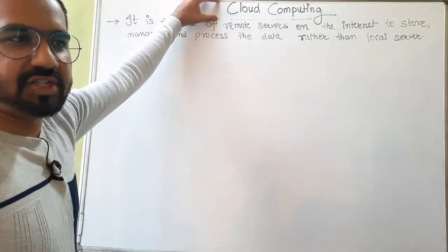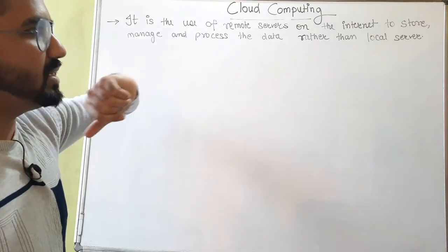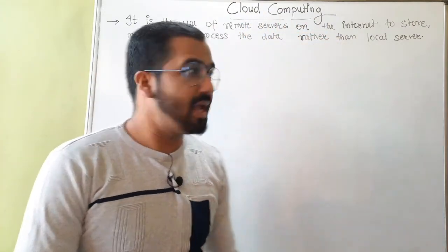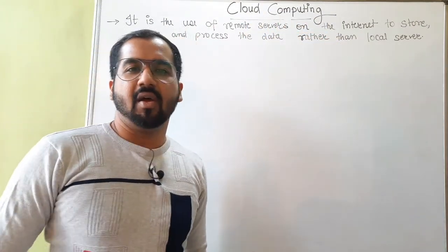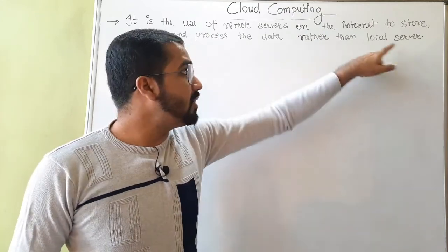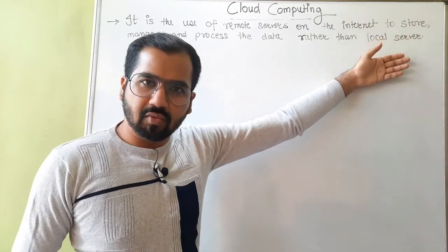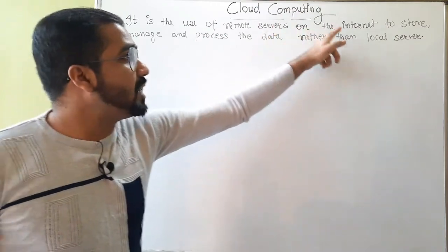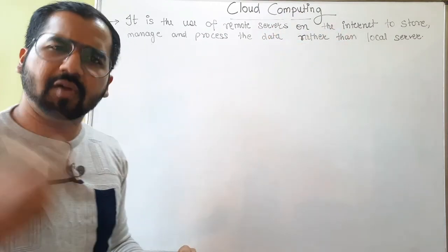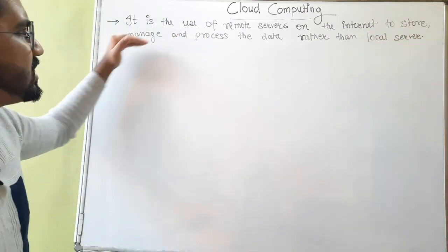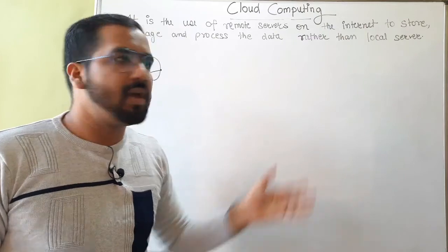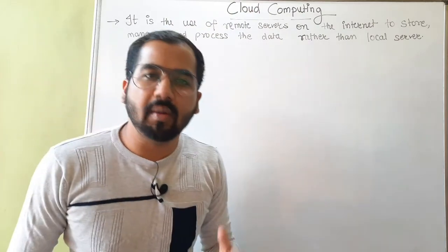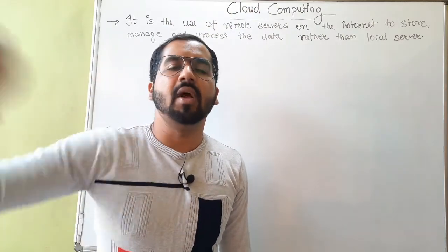Now let's understand a definition of cloud computing. It is the use of remote servers on the internet to store, manage, and process the data rather than local servers. In the first situation, we bought our own servers — those were the local servers. Instead, there is a provider who has remote servers, and over the internet you just access them for various purposes: storing data, managing data, processing data — whatever your requirement is. And for whatever you are using, you just have to pay for it.